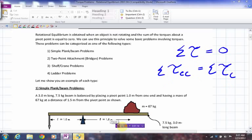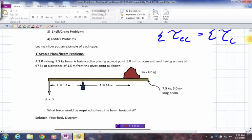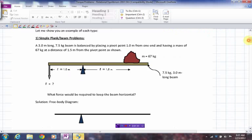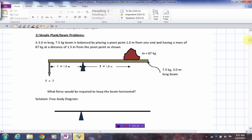Now, the first type of problem are relatively simple problems. You can call this simple plank, beam problems, teeter-totter problems, whatever you want to call them. Basically, we have a simple beam like this with a pivot point at one point, and then you're going to be asked to solve a problem. In this case, we have a pivot point here, all set up, ready to go.